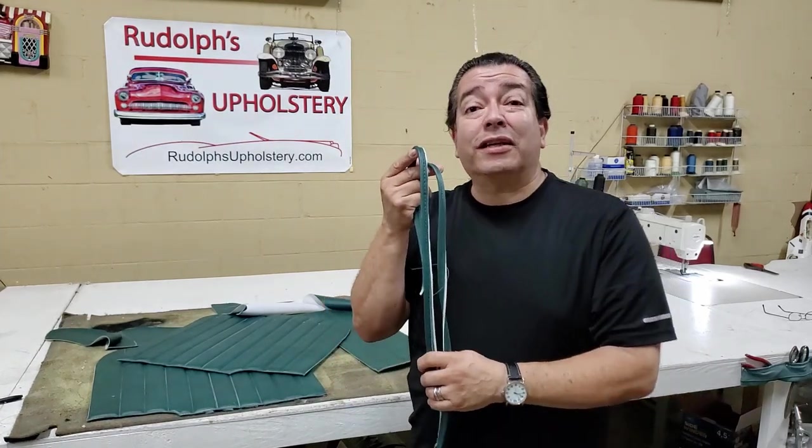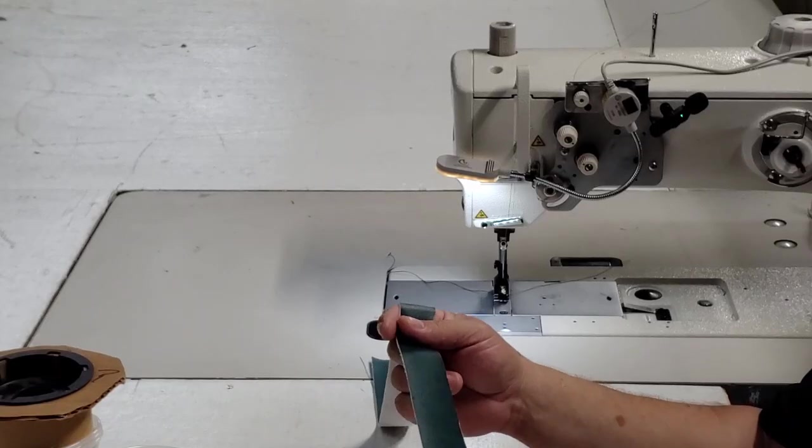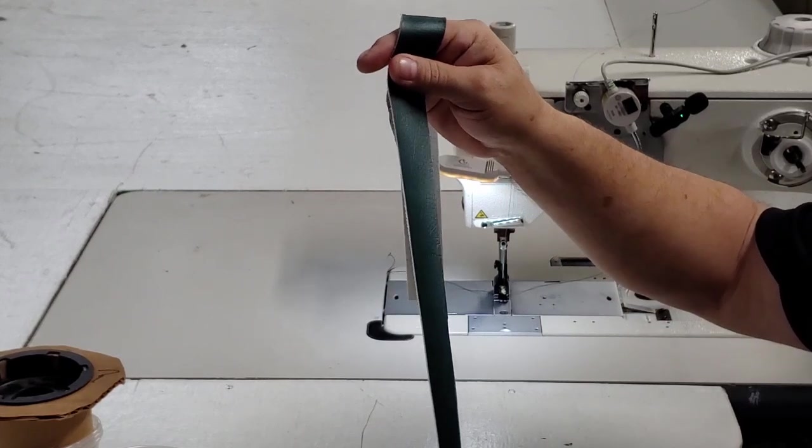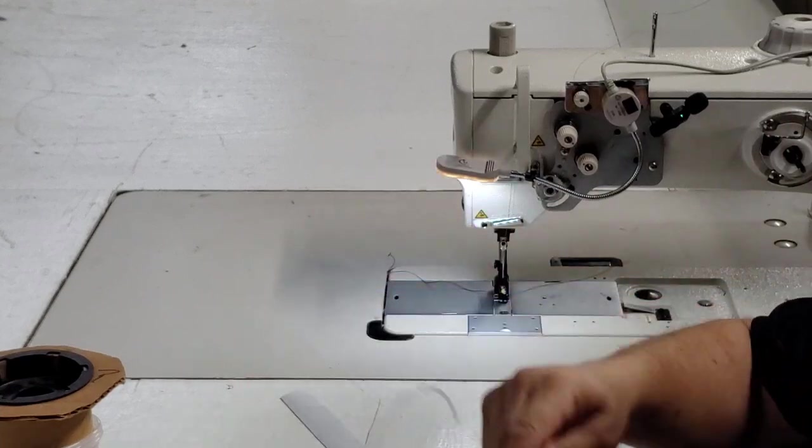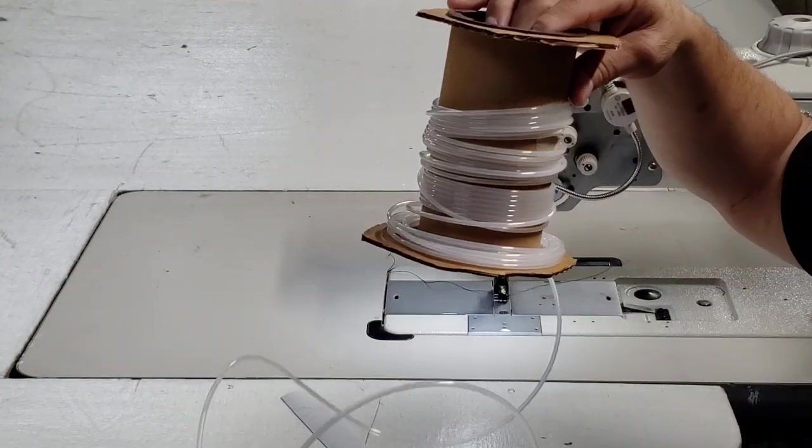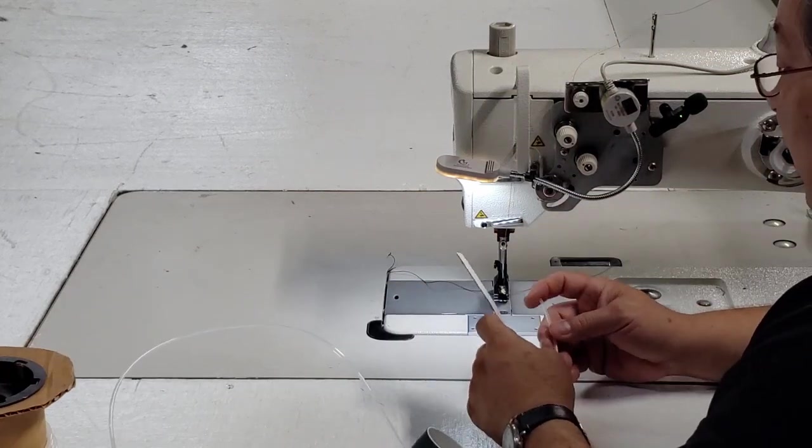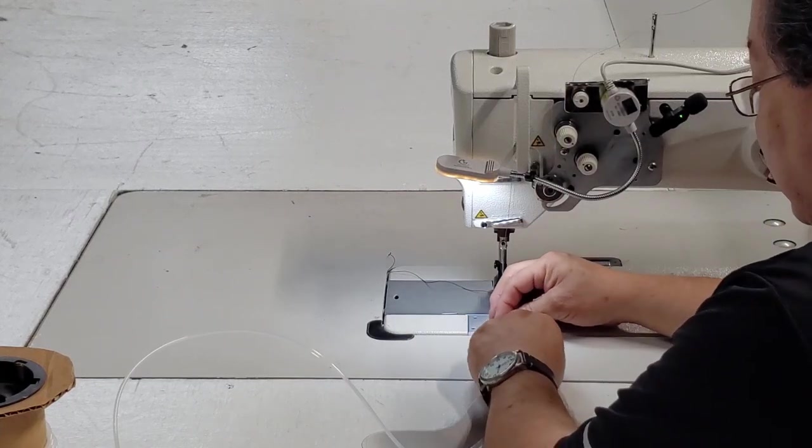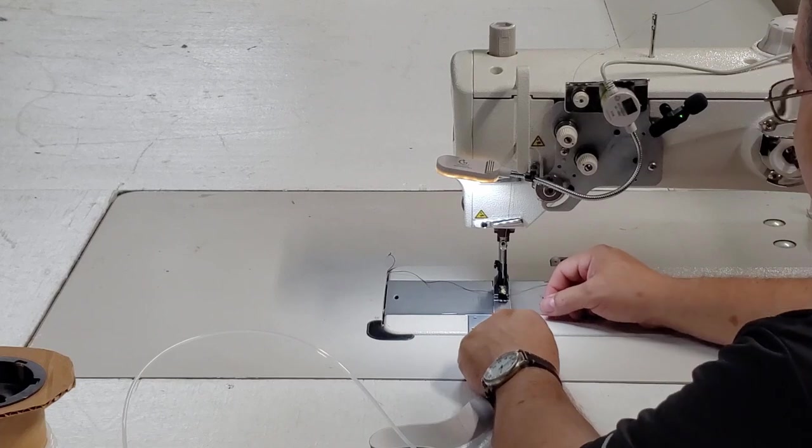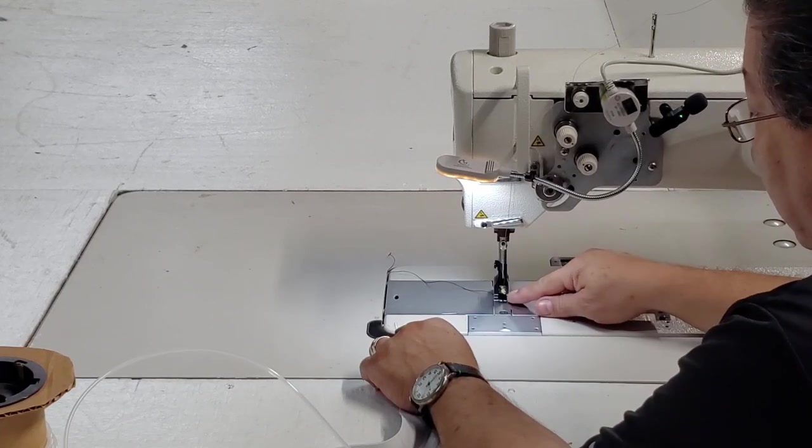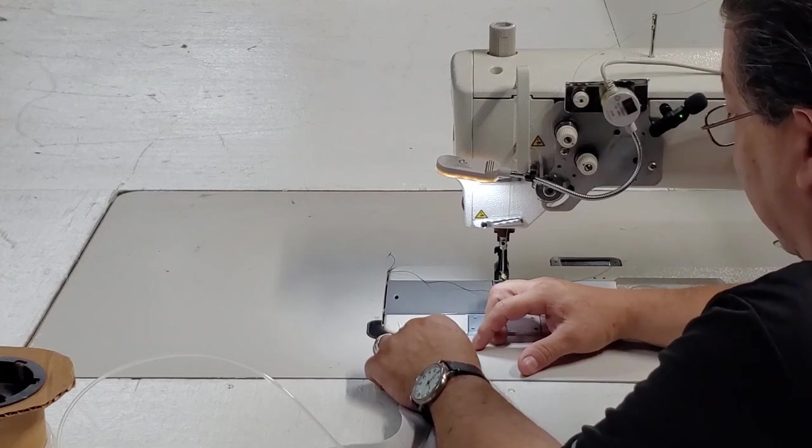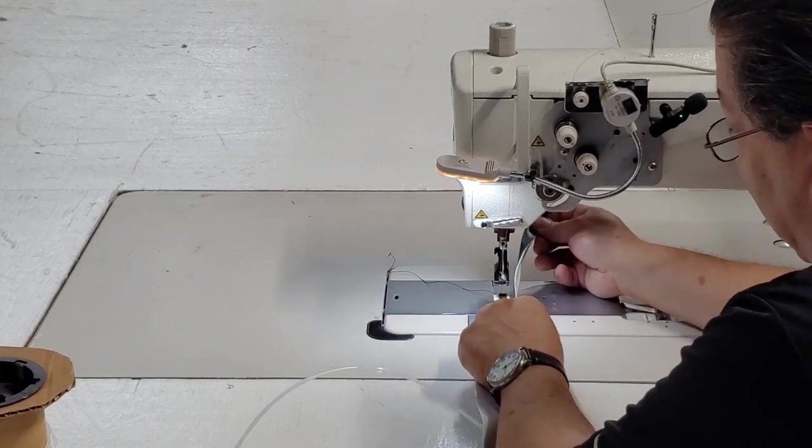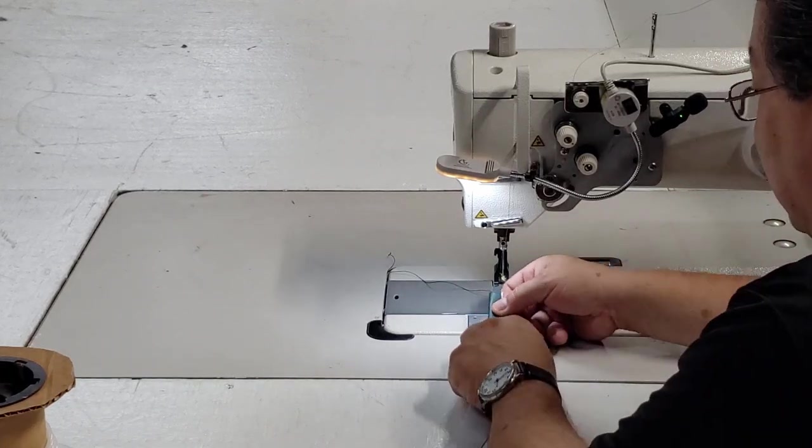To make welt, you'll cut about one and a quarter to one and a half inch strip like this, then use your welt cord. I'm going to show you two ways of making welt using different methods. You're going to want a machine that has a welt foot right here. There's a channel underneath that guides this welt along.